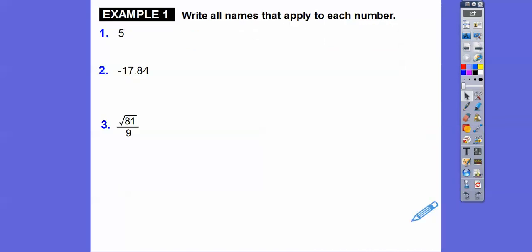So write all the names that apply to each number. So 5 — is 5 a natural number? Yes, that's a natural number. It's also a whole number. It's also an integer. It's also a real number.